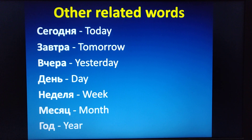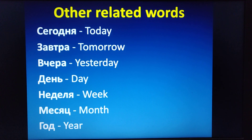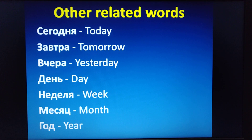Now other related words. For today we say Sivodhnya. Tomorrow is Zavtra. Yesterday is Fichira. Day is called Jain. Week is Nijelia. Month is Mesyats. And year is God. Repeat in Russian: Sivodhnya. Zavtra. Fichira. Jain. Nijelia. Mesyats. And God.